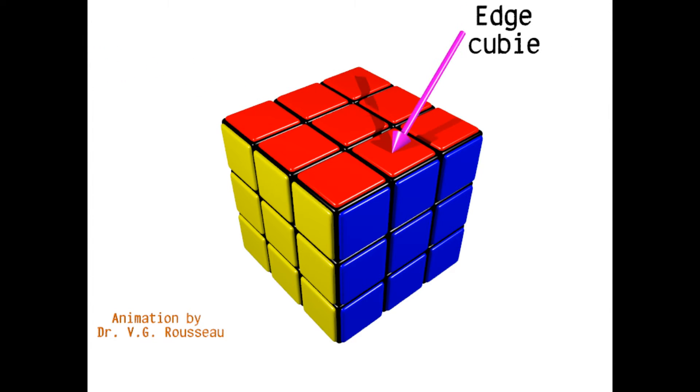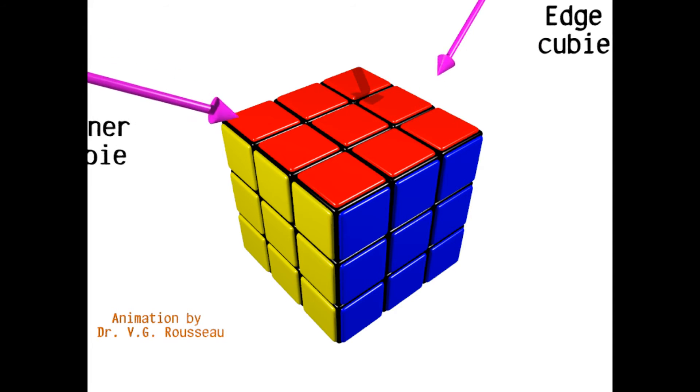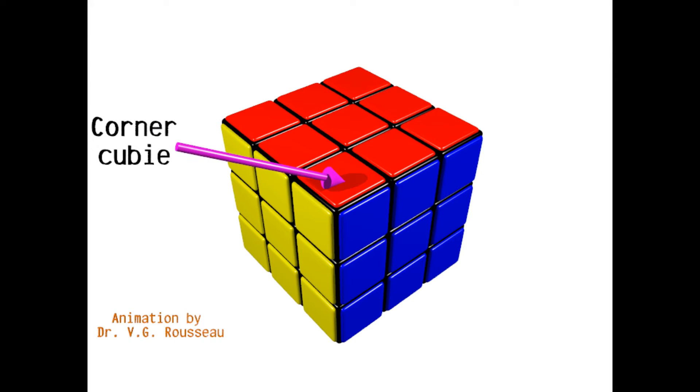There are also 12 edge cubies, each being shared by two faces, and, as such, identified by two colors, for example, red-blue. And finally, there are eight corner cubies, and, you guessed it, they are shared by three faces, and therefore identified by three colors: red, blue, yellow, in the present case.